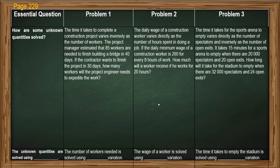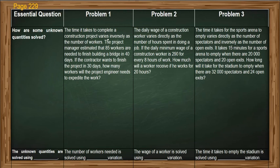Let us have this set of problems first before you independently solve on your own. It is found on page 229 of your book. Kindly have with you your book, a pen, or a working paper. I'll be guiding you in answering each. The essential question is: how are some unknown quantities solved? This question can be answered after we have answered the three problems here, which come from different types of variation.